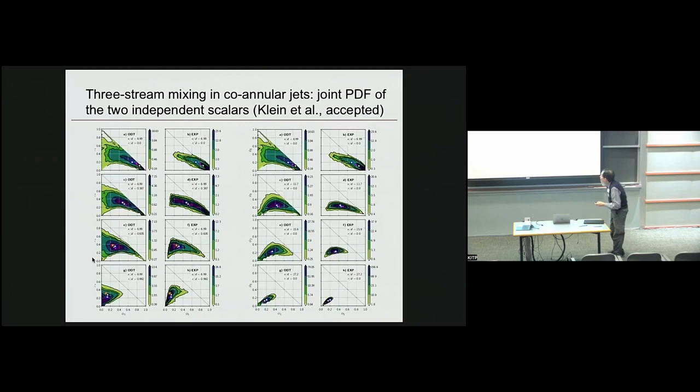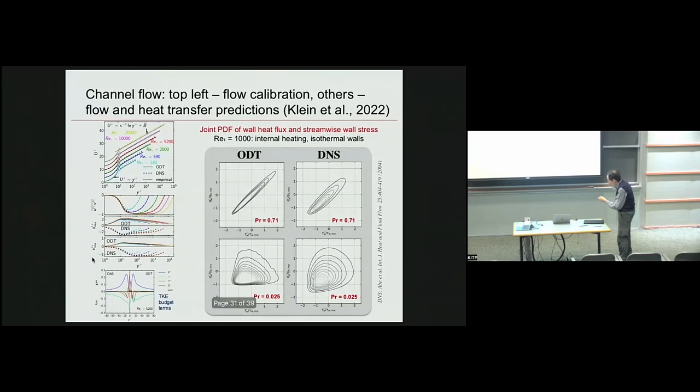Now I'm going beyond interfaces. I wanted to show a couple validation cases, first for mixing. This is coannular jets, and so it's a three stream mixing problem, two independent scalars, and you just have ODT versus experiments for various locations, radial, axial, what have you, the joint PDF of the two scalars.